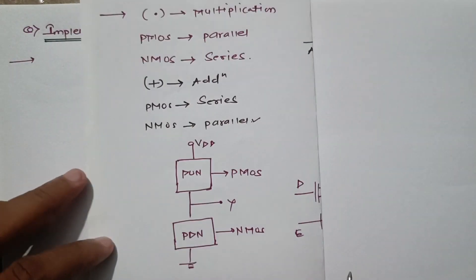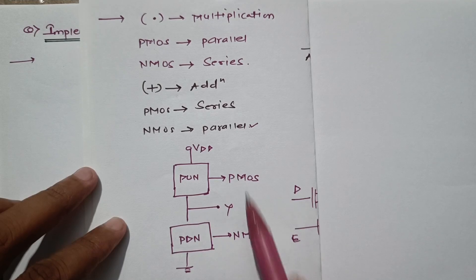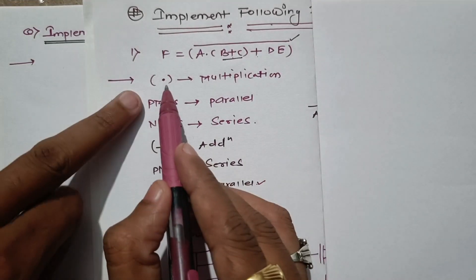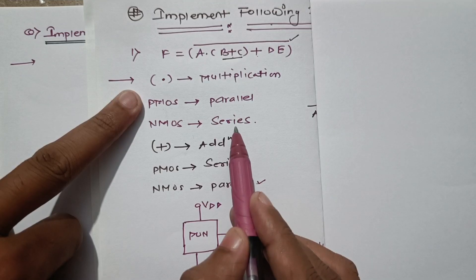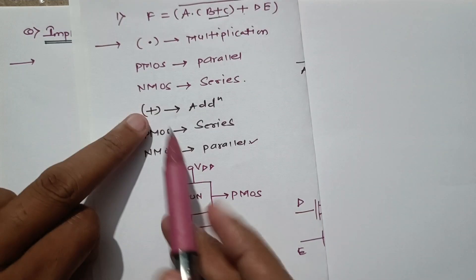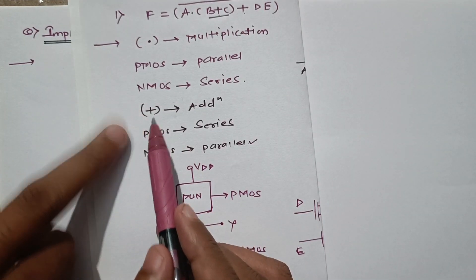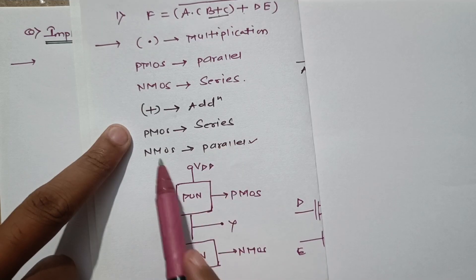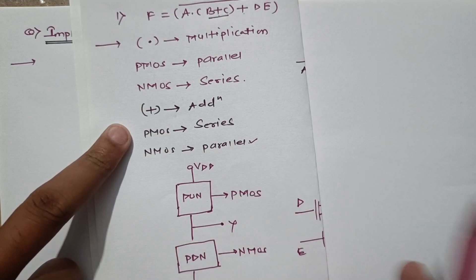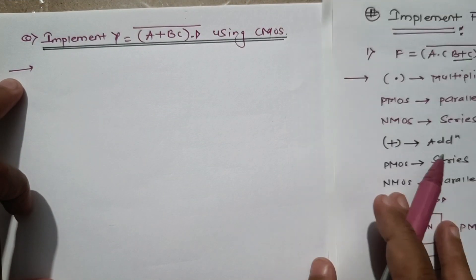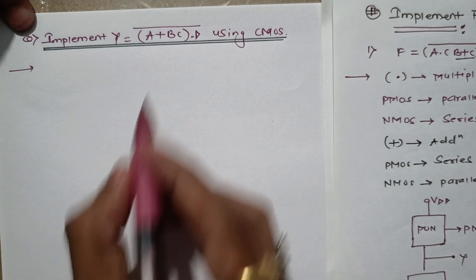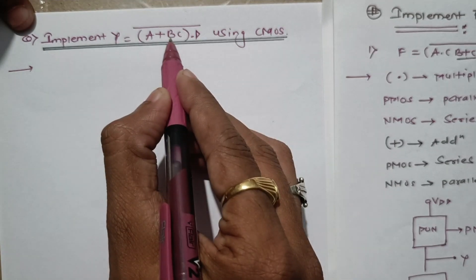We need PMOS and NMOS. When we have a multiplication sign, PMOS will be in parallel and NMOS in series. If we have an addition operator, PMOS will be connected in series and NMOS connected in parallel. I will use this rule to implement our function.